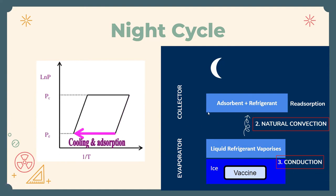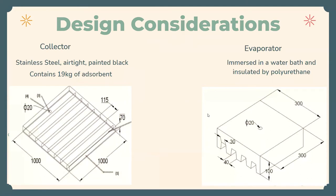Looking into some of the design considerations of SOVAC, the collector plate is supposed to be built of stainless steel. It's supposed to be airtight to retain the potency of the absorbent. It is supposed to be painted black for maximum heat absorption. Similarly, the evaporator is supposed to have a polyurethane insulation.